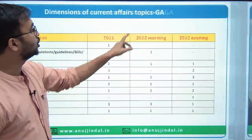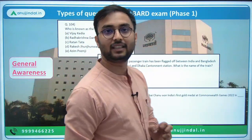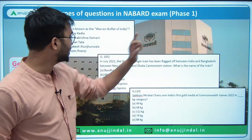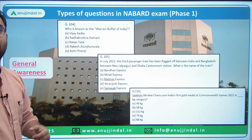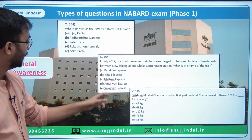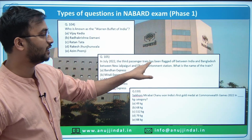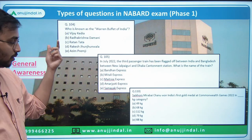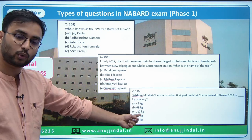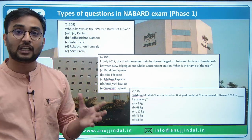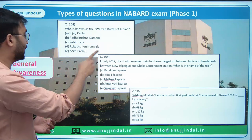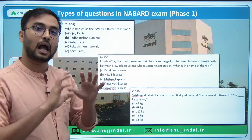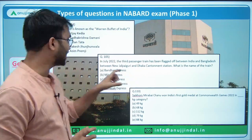Now let's discuss the type of current affairs questions asked in NABARD exam in the General Awareness section in Phase 1. First example: 'Who is known as the Warren Buffett of India?' — a completely factual question covered in Spotlight. Second: 'Which passenger train was started between India and Bangladesh?' — the train name was asked, and this news was also in Spotlight. Third: Mirabai Chanu's weight category was asked in the context of Commonwealth Games. Look at the difficulty — it's not just knowing she's a weightlifter, but the specific weight category.